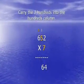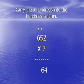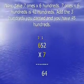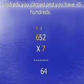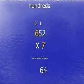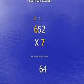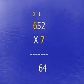And we carry the three hundreds over into the hundreds column. So, now take those seven ones times the six hundreds. Seven ones times six hundreds is 42 hundreds. Add to that the three hundreds we carried over and you have 45 hundreds.